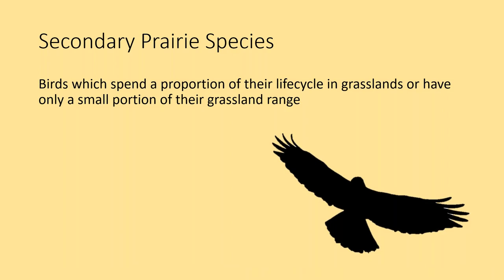That concludes our primary prairie endemic species. Secondary prairie species are birds that spend only a proportion of their life cycle in grasslands, or whose range only partially overlaps with grasslands. As a result, far fewer of these species are species at risk, as they can adapt to a wider variety of habitats. Many of these secondary prairie species can be found in both the tallgrass and mixed grass prairie areas.